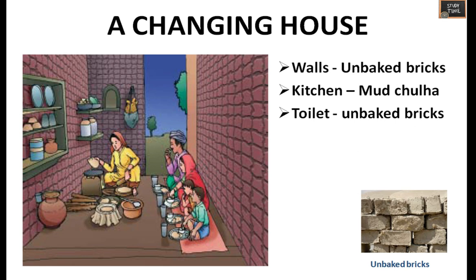A Changing House: Time passed and Chetan Das finished his studies and got a job. Before marriage, he planned to build a new house with cement and bricks. He used unbaked bricks for the walls - you can see unbaked bricks in the picture. This was very easy compared to the previous house. They could whitewash the walls once a year and they had a big kitchen.